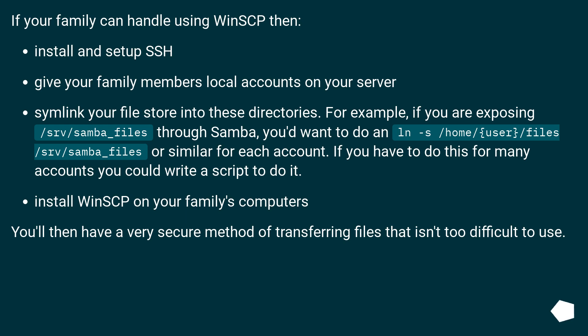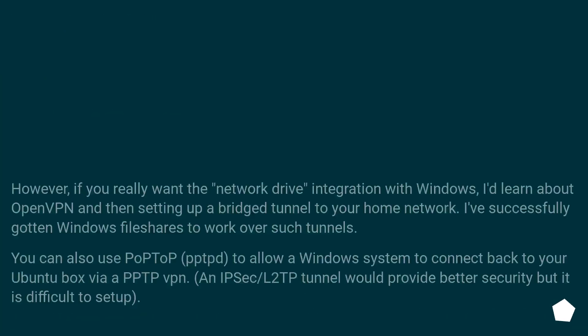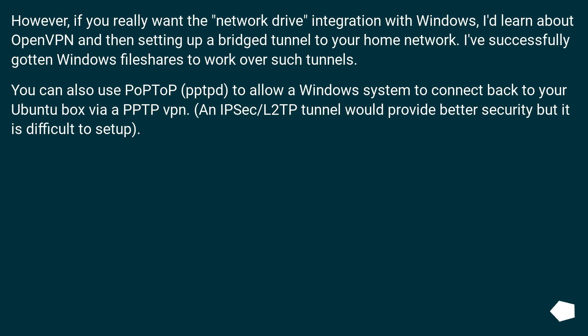Install WinSCP on your family's computers. You'll then have a very secure method of transferring files that isn't too difficult to use. However, if you really want the network drive integration with Windows, learn about OpenVPN and then setting up a bridge tunnel to your home network — Windows file shares can work over such tunnels. You can also use PopTop to allow a Windows system to connect back to your Ubuntu box via PPTP VPN. An IPSec/L2TP tunnel would provide better security but is difficult to set up.